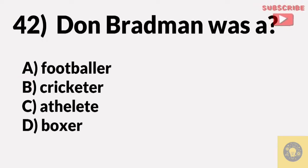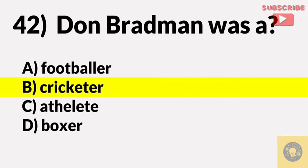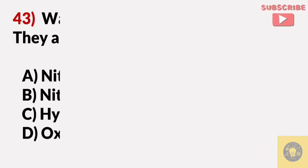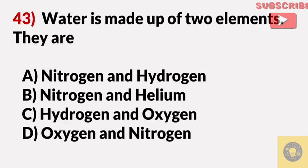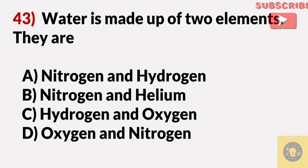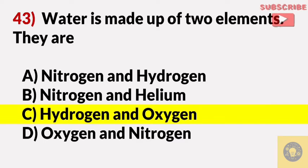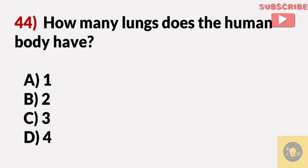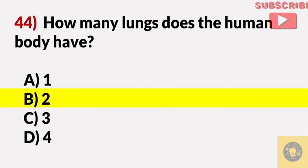Don Bradman was a? Answer B, cricketer. Water is made up of two elements — they are? Answer C, hydrogen and oxygen. How many lungs does the human body have? Answer B, two.